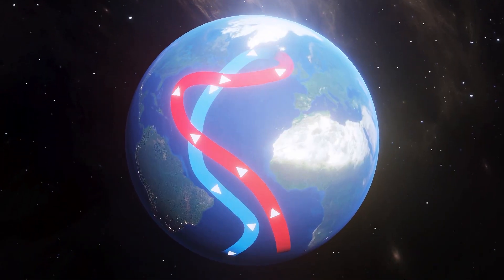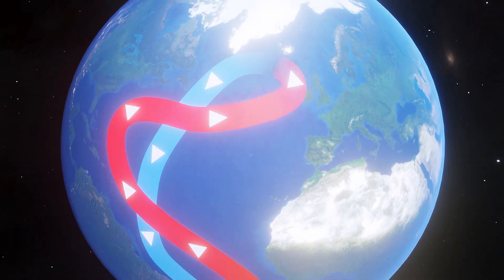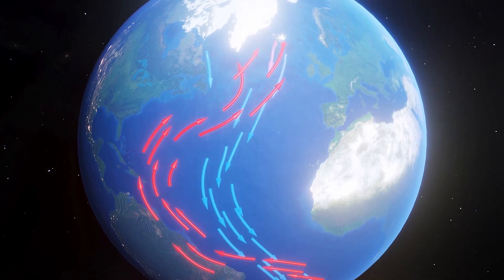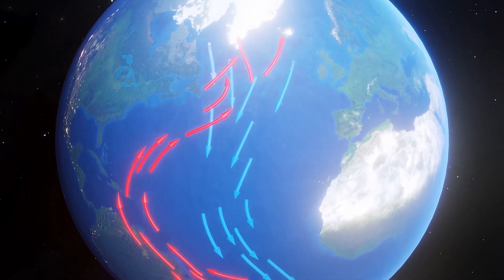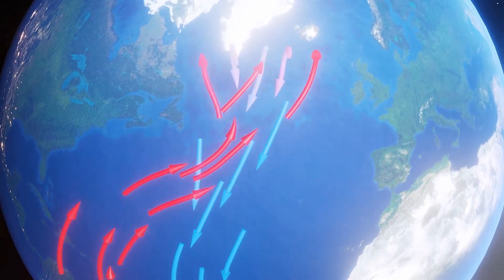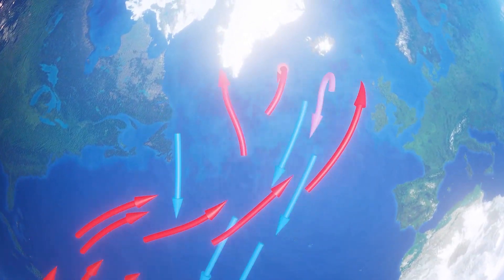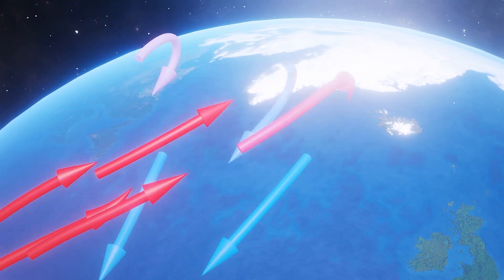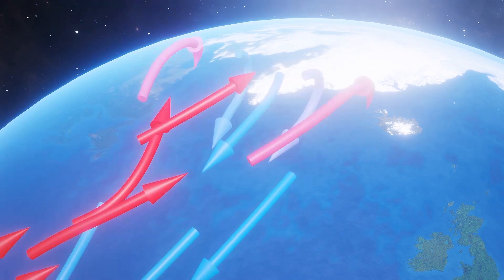The Guardian reports that climate scientists have detected warning signs of the collapse of the Gulf Stream, one of the planet's main potential tipping points. The research found an almost complete loss of stability over the last century of the currents that researchers call the Atlantic Meridional Overturning Circulation, or AMOC. The currents are already at their slowest point in at least 1,600 years, but the new analysis shows they may be nearing a shutdown.